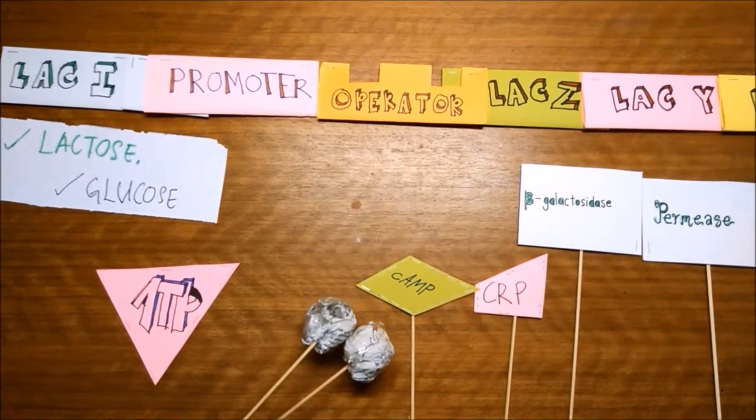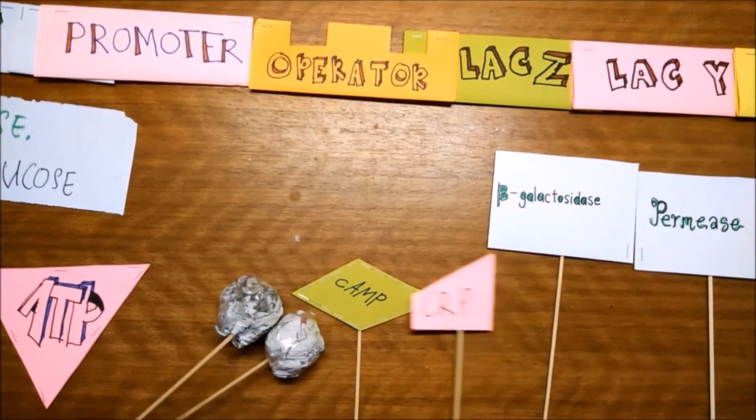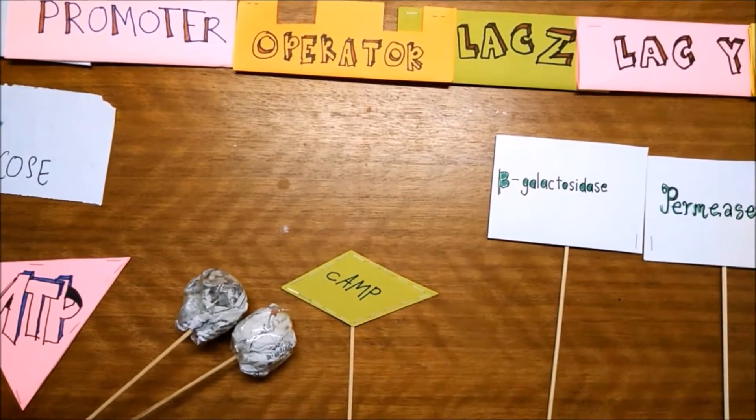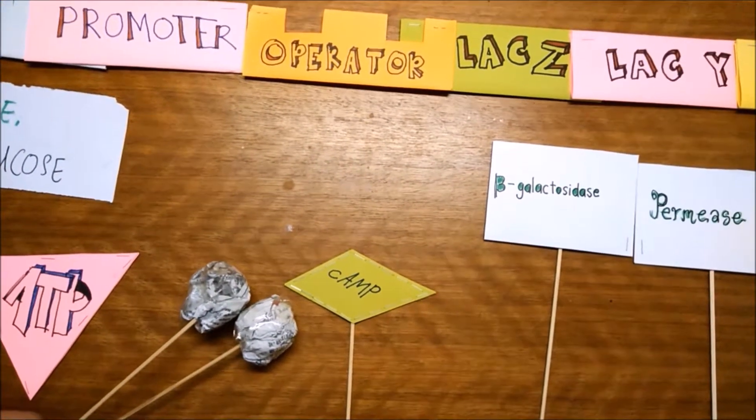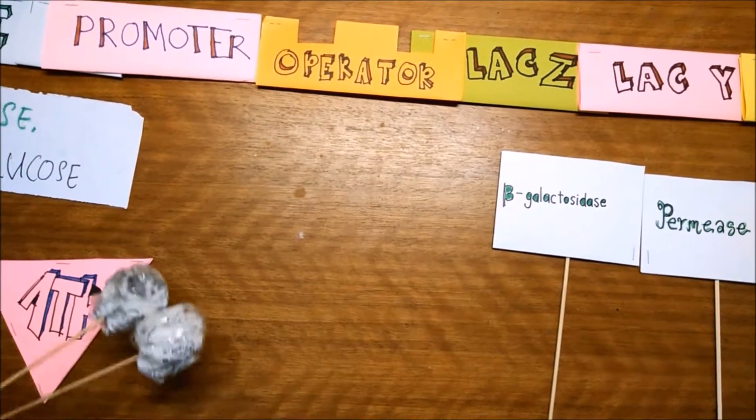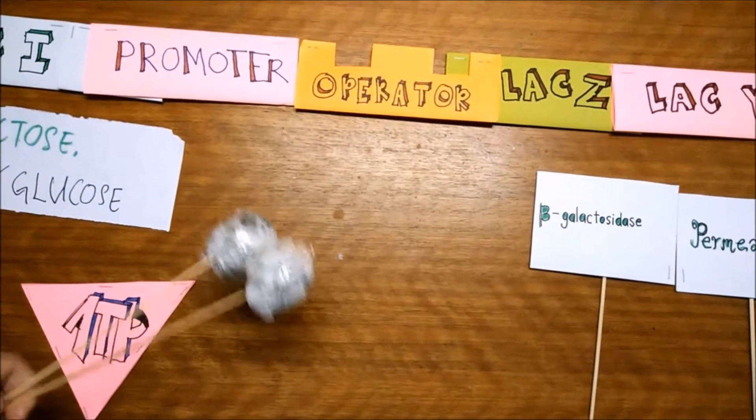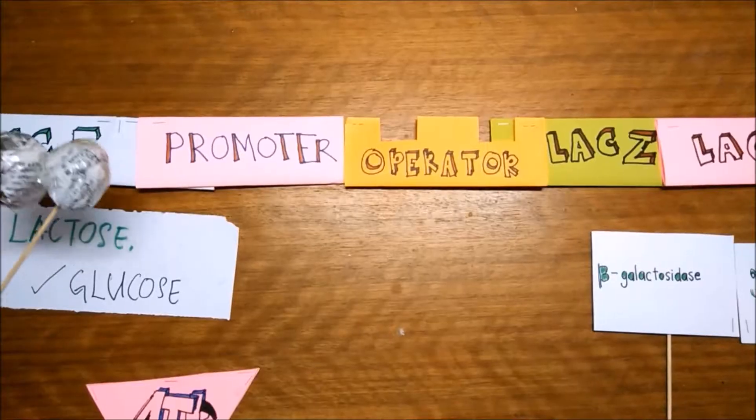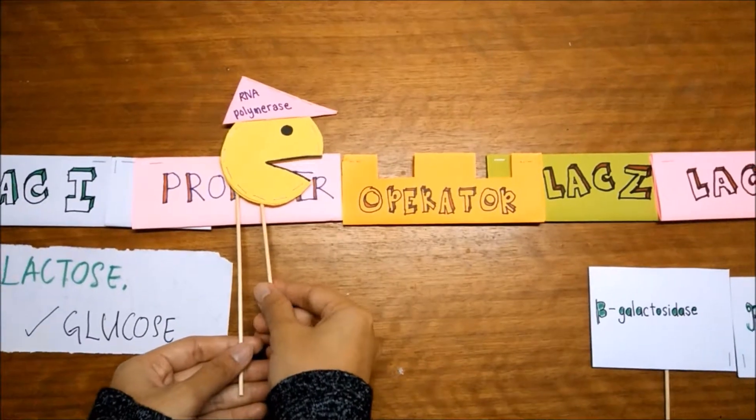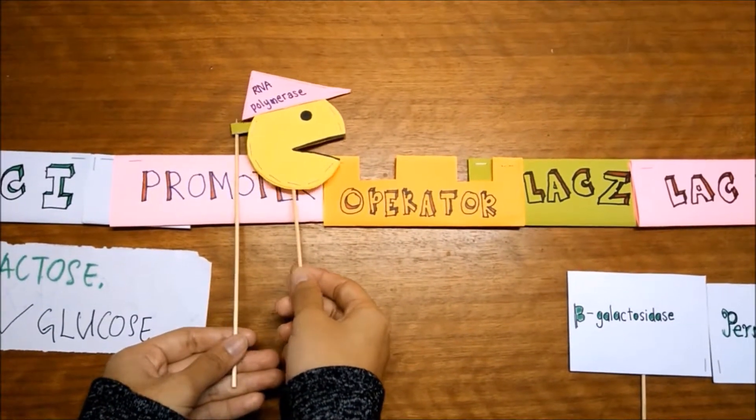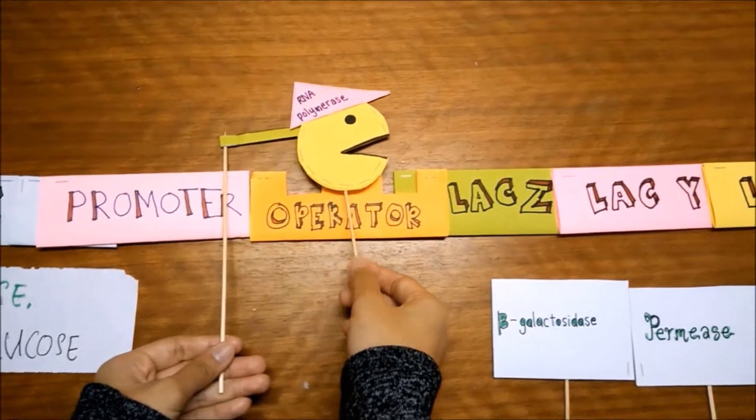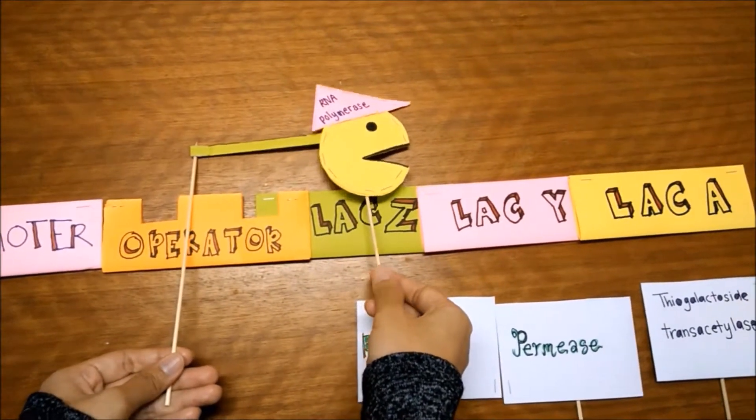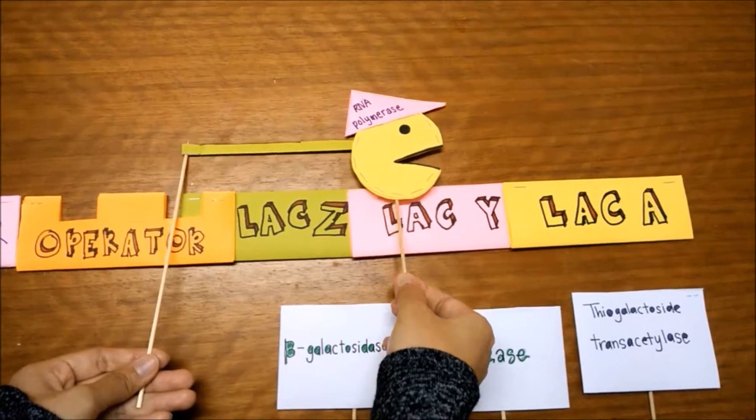So CRP cannot bind to the cAMP. So both of the proteins cannot bind to the promoter. Transcription still occurs but in a lower level because the receptor protein did not help the transcription.